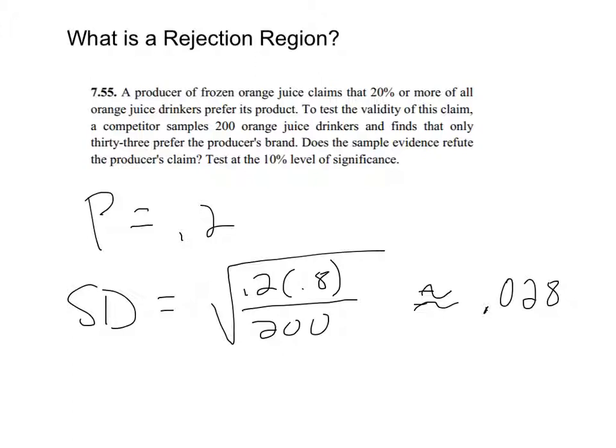The standard deviation for proportions is you take your stated center and you calculate it times 1 minus that center, divide it by your sample size, take the square root. So that's the standard deviation, and here's the center for the sampling distribution.